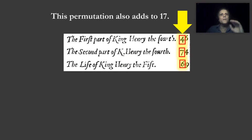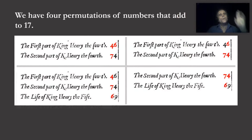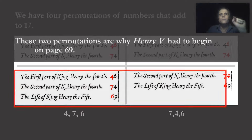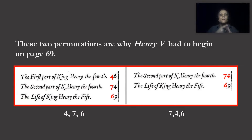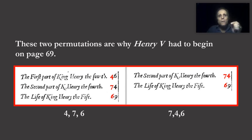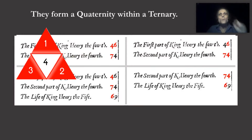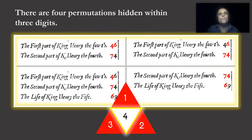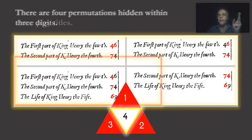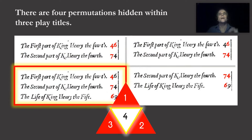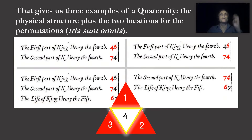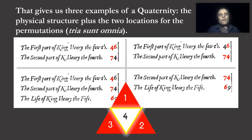What I had discovered seemed not to be random at all. So we have four permutations of the numbers that add to 17. These two permutations — 4, 7, 6 and 7, 4, 6 — are why Henry V had to begin on page 69. That means we have enough clues to indicate these were meant to be there. They form a Quaternity within a ternary because there are four permutations hidden within three digits and four permutations hidden within three play titles. That gives us three examples of a Quaternity — the physical structure plus the two locations before the permutations — satisfying the maxim 'tria sunt omnia,' or 'three is all.'